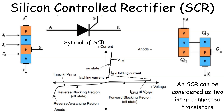It has three main terminals: the anode (A), cathode (K), and the gate (G). These terminals are crucial for controlling and switching the device on or off.